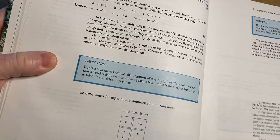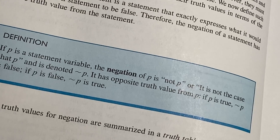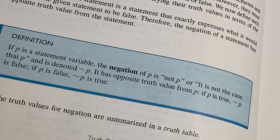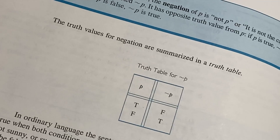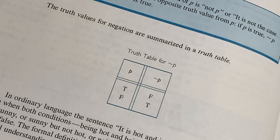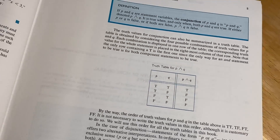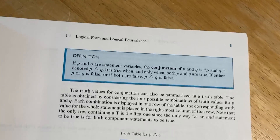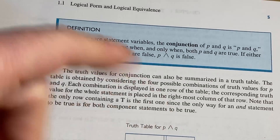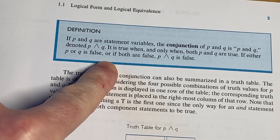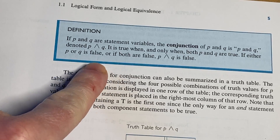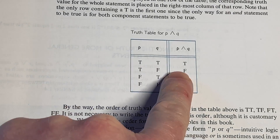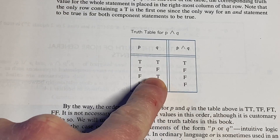Here, for example, is a definition. If P is a statement variable, the negation of P is 'not P' or 'it is not the case that P,' denoted with a tilde symbol. It has the opposite truth value from P: if P is true, not P is false; if P is false, not P is true. The truth values for negation are summarized in a truth table. Then we have P and Q. The conjunction is basically 'and': if P and Q are statement variables, the conjunction is P and Q, denoted P and Q. It is true when and only when both P and Q are true; otherwise it is false — as shown in the truth table.